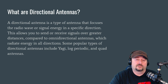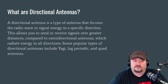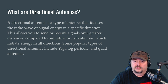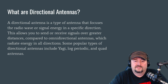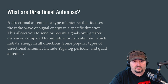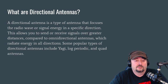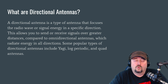What is a directional antenna? A directional antenna is a type of antenna that focuses radio wave or signal energy in a specific direction. This allows you to send or receive signals over a greater distance compared to omnidirectional antennas, which radiate their energy in all directions. Some popular types include Yagis or Yagi-Udas, log periodics, and quad antennas, though there are many more.